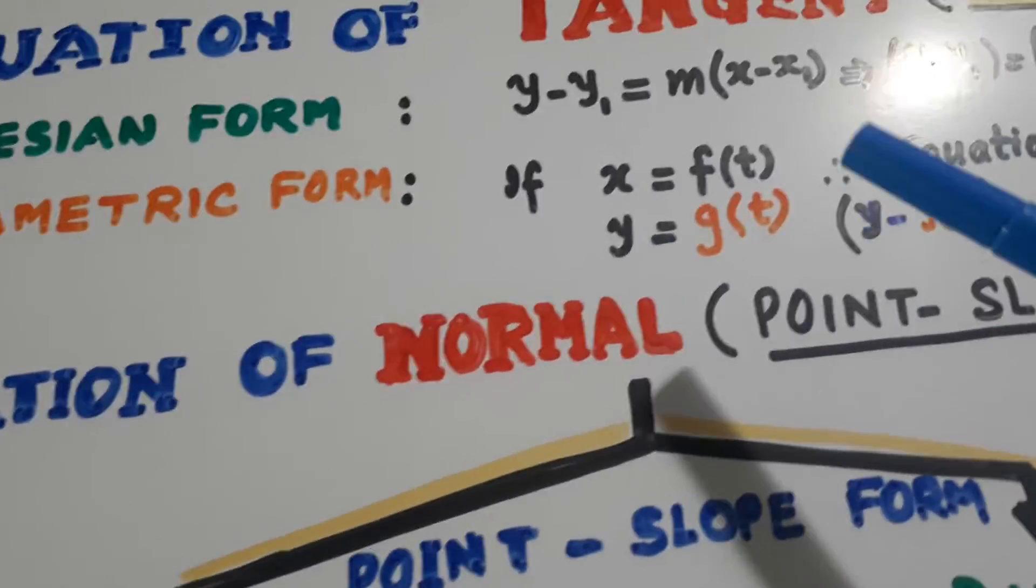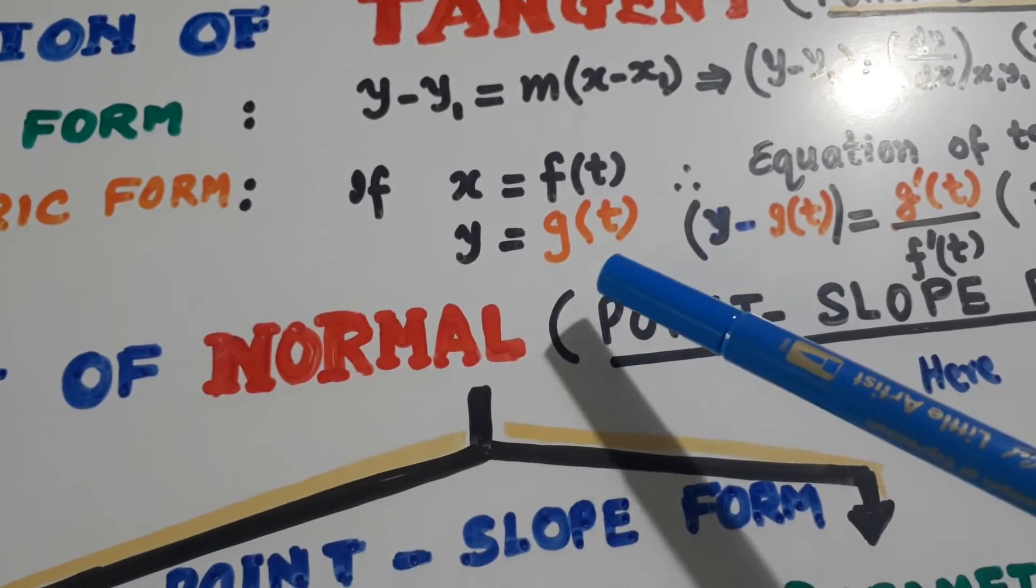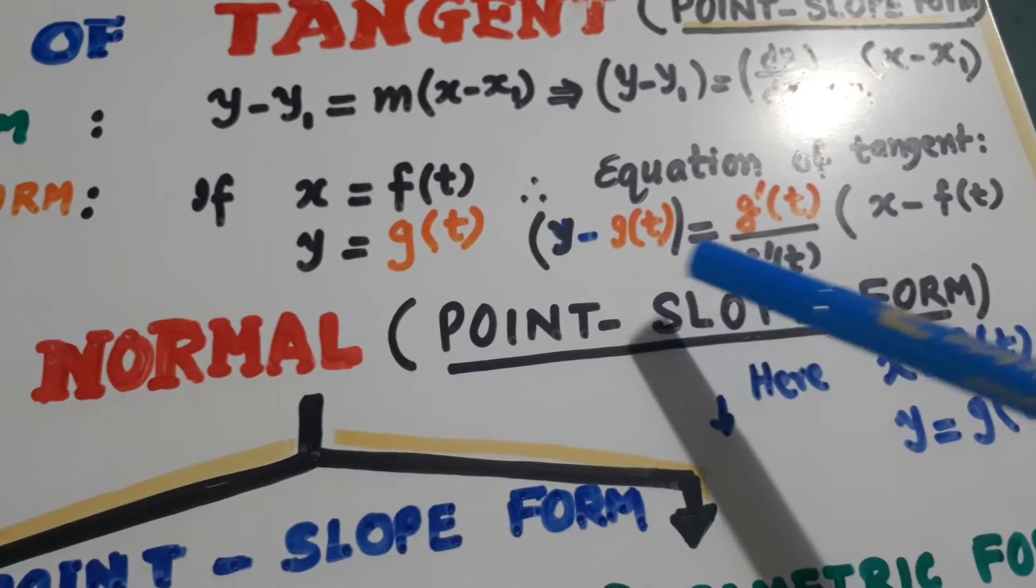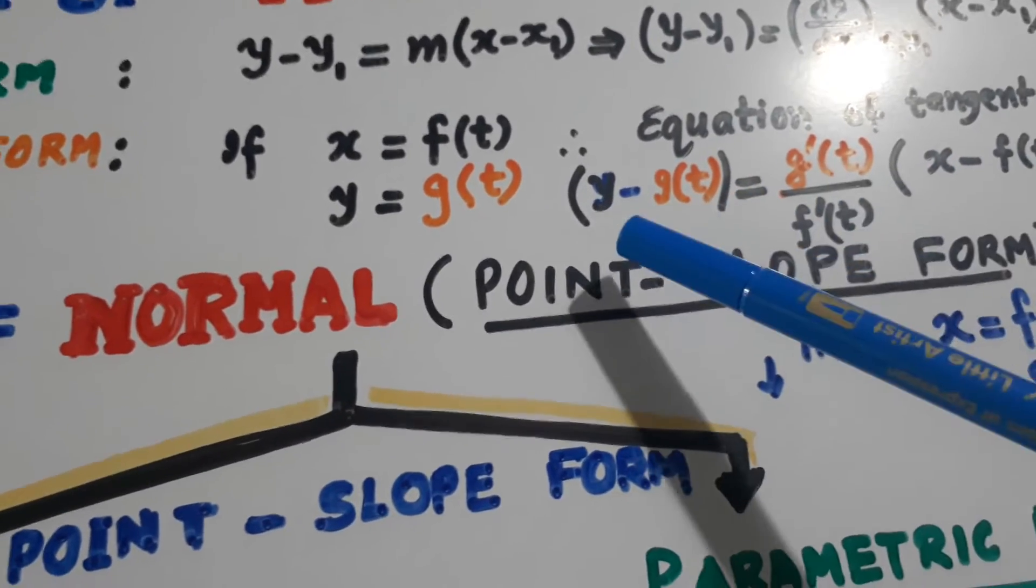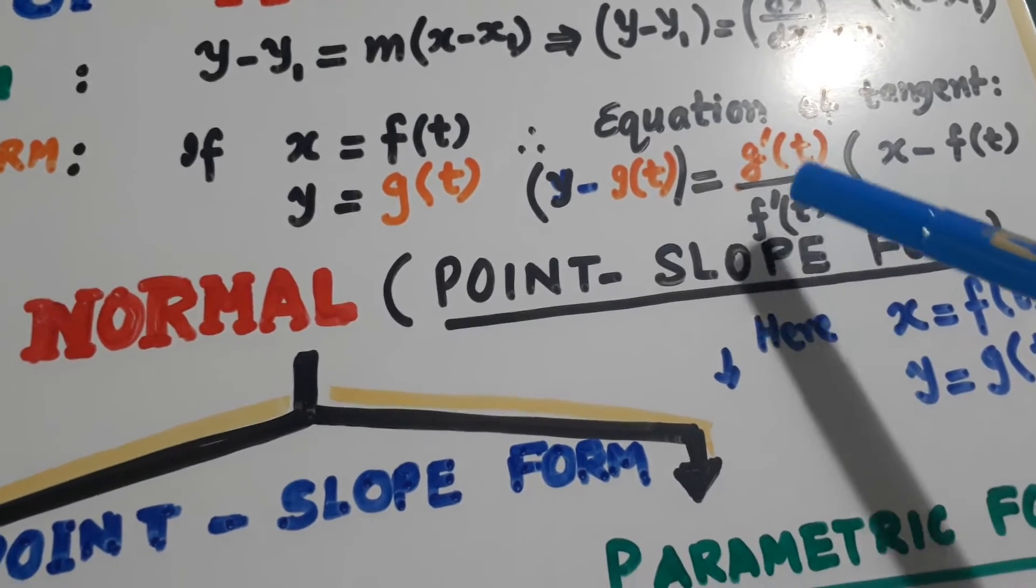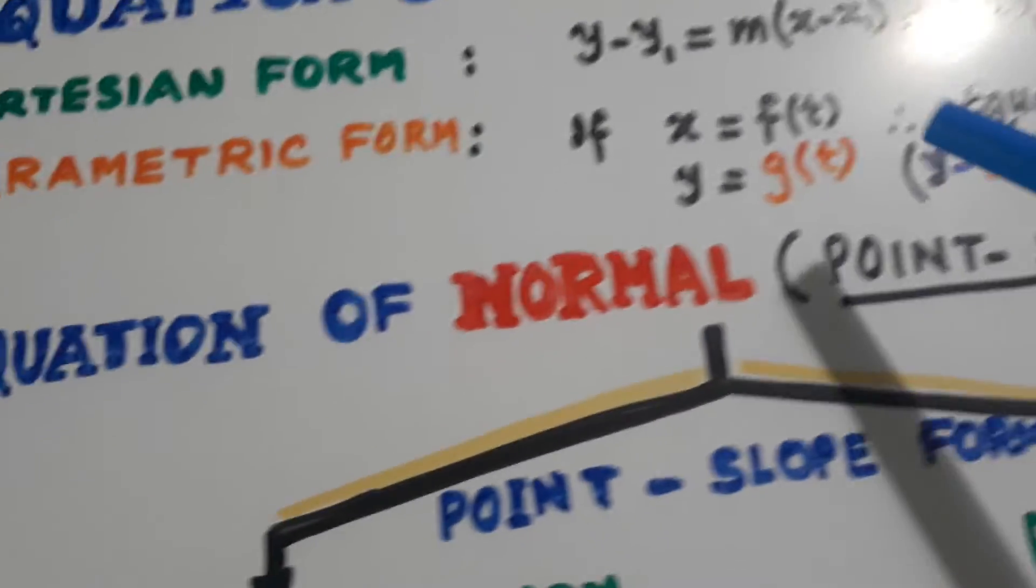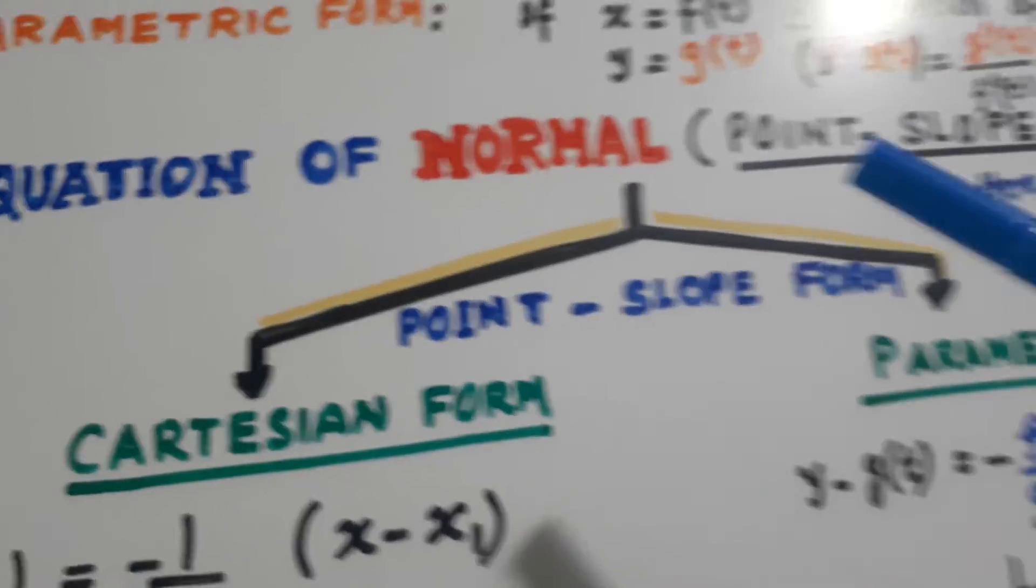And parametric form. If x equals f(t), y equals g(t), then the equation of tangent is y minus g(t) equals g'(t) over f'(t) times (x minus f(t)). So this is the parametric form.